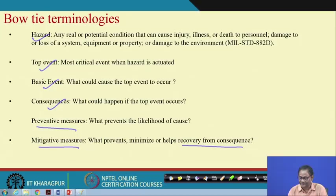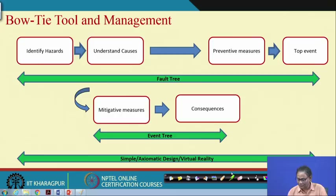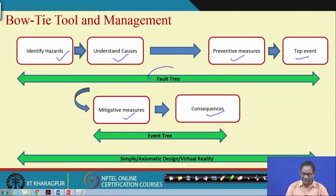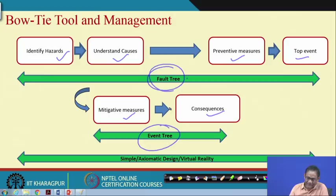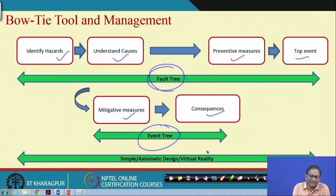The bow tie tool follows a sequence: from hazard, then causes, then preventive measures, then the top event, then mitigating measures, then the major consequence. When we talk about the top event with reference to probability we are bringing in the fault tree; when we talk about consequences we are bringing in the event tree. So fault tree and event tree are linked. There are also simple design, axiomatic design, and various analytics that can be added. All of this ultimately leads to identifying hazards, safety-critical factors, and factors contributing to hazard occurrence.